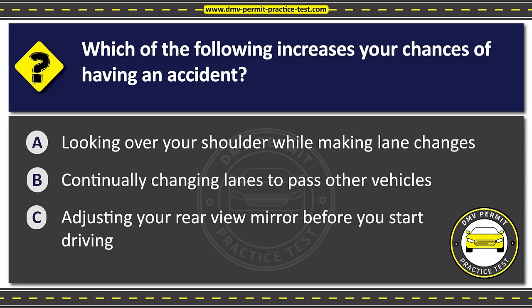Question twenty-six. When planning to pass another vehicle, you should Option A: Not assume they will make space for you to return to your lane. Option B: Assume they will let you pass if you use your turn signal. Option C: Assume they will maintain a constant speed. The correct answer is Option A: Not assume they will make space for you to return to your lane.